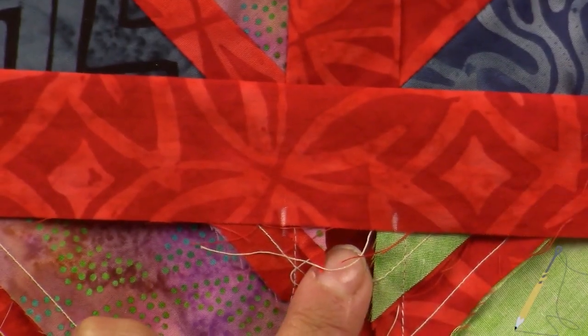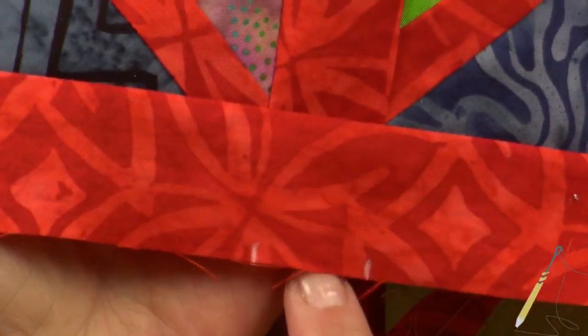Like that, and you'll do that all the way down for all of your horizontal sashings here that you want to match. You want to bring those lines down to the edge, and here's how you will mark.